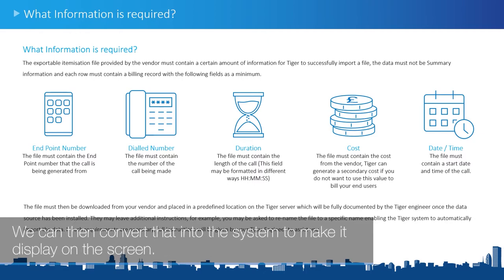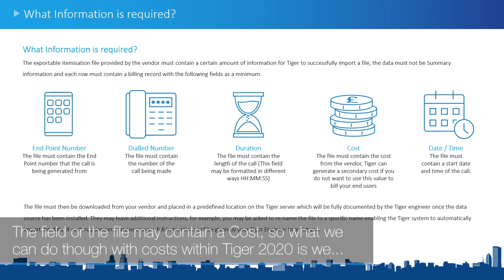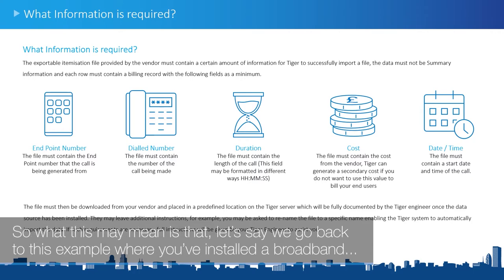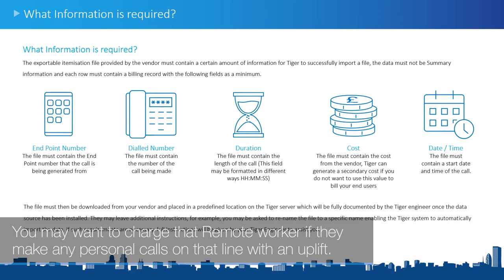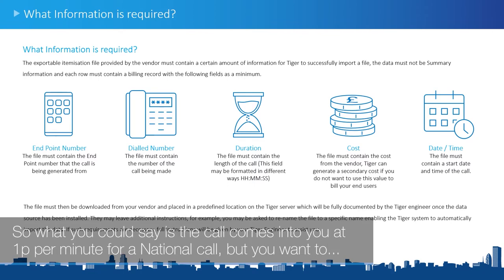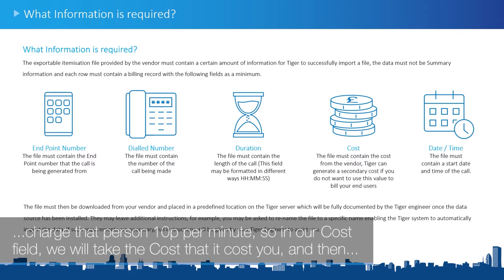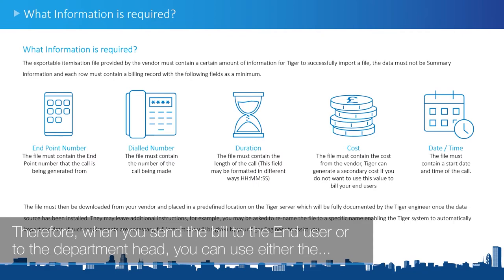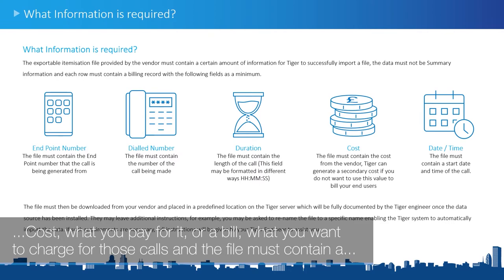The file may also contain a cost. Within Tiger 2020 we can take the cost from the file and place it in your cost field, then generate a secondary cost. For example, if you've installed a broadband line in a remote worker's house, you may want to charge that worker an uplift for personal calls. The call may come to you at one pence per minute for a national call, but you want to charge that person 10 pence per minute. So in our cost field we take what it cost you and use a tariff to generate a bill, allowing you to send either the cost you paid or the bill you want to charge.